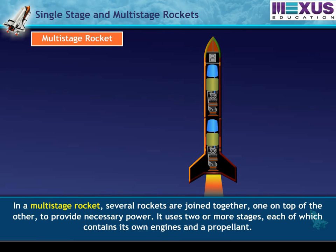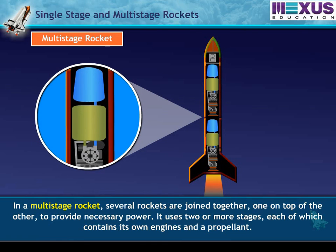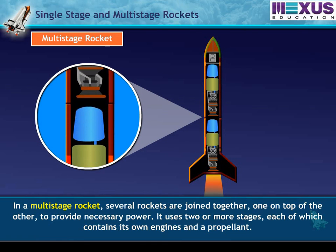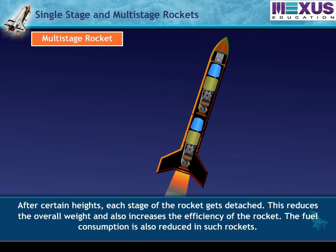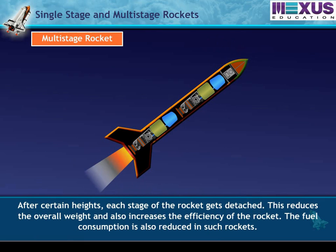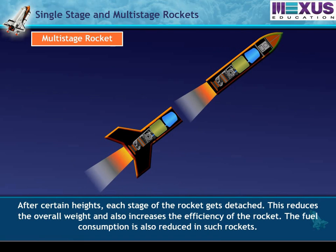In a multi-stage rocket, several rockets are joined together, one on top of the other, to provide necessary power. It uses two or more stages, each of which contains its own engines and propellant. After certain heights, each stage of the rocket gets detached, reducing the overall weight and increasing efficiency. The fuel consumption is also reduced in such rockets.